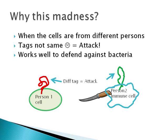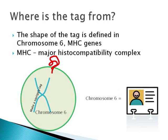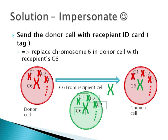Now the same technique hurts us when we want to introduce foreign cells into our bodies. Where do these tags come from? How does one person's cells know that they have to make squiggly tags and another person's cells know that they have to make straight tags? The answer lies deep inside the cell in chromosome 6. Chromosome 6 has many genes called major histocompatibility complex, or MHC genes, which have the blueprint for these proteins. You can think of chromosome 6 as the ID card of a person. So, what's the solution to this problem?